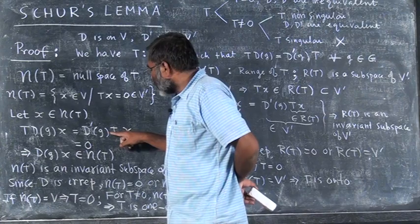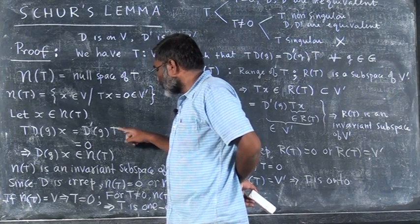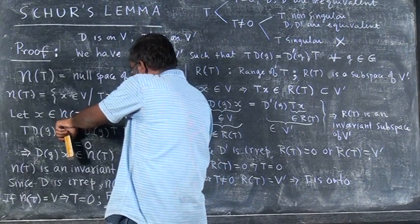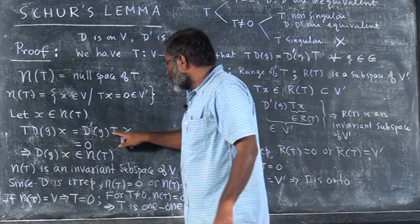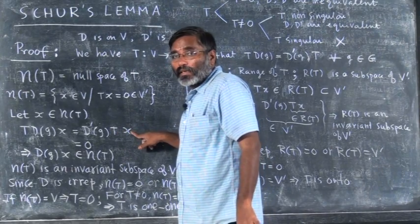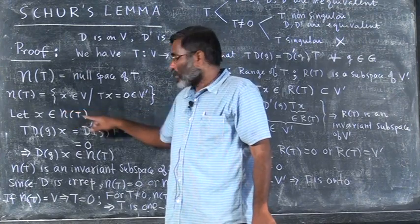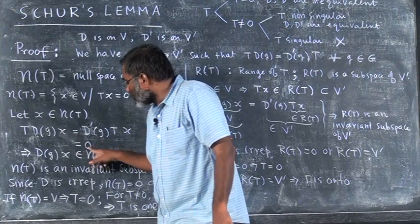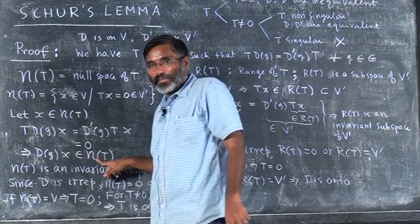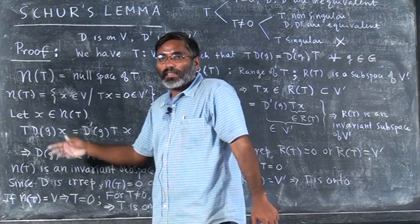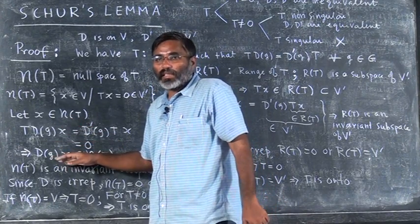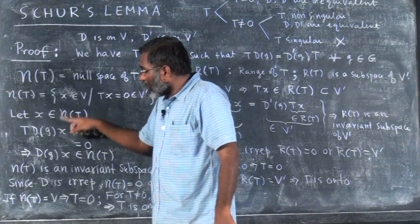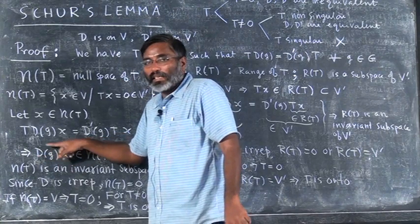So if I take T of X — see, without X, this is the intertwining operation. Now I am putting X from the right hand side on both equations. T of X is 0. Why? Because X is in N of T, so the right hand side is 0. So T acting on D of G of X equal to 0 implies D of G of X is also in N of T. This is true for all G, because I did not choose any particular G — G is arbitrary here. That means this N of T will remain invariant under the action of representation D of G.